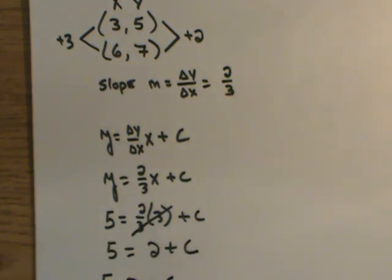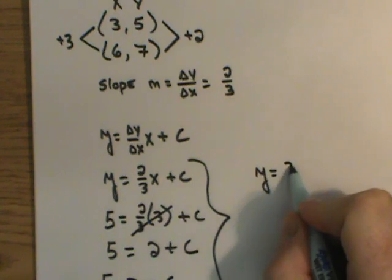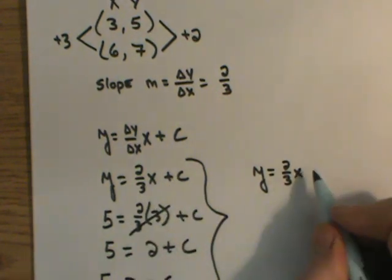This gives me the y intercept, where it's going to cross the y axis. I can take all this information now and write an equation. My equation will be y equals 2 thirds x. And now I can put a value in for c. It will be plus 3.